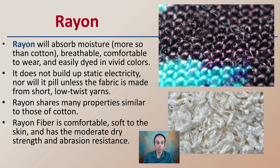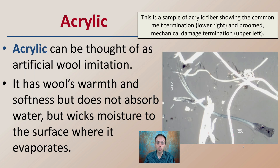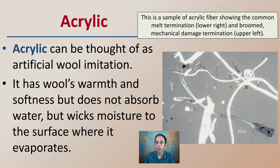Rayon shares properties similar to those of cotton — it is comfortable, soft to the skin, and has moderate dry strength and abrasion resistance, all properties that make it favorable for different textiles, particularly clothing. Acrylic can be thought of as an artificial wool imitation. It has wool's warmth and softness but does not absorb water — instead it wicks moisture to the surface where it evaporates. Under the microscope, we can see melt termination in the lower right and mechanical damage termination in the upper left.